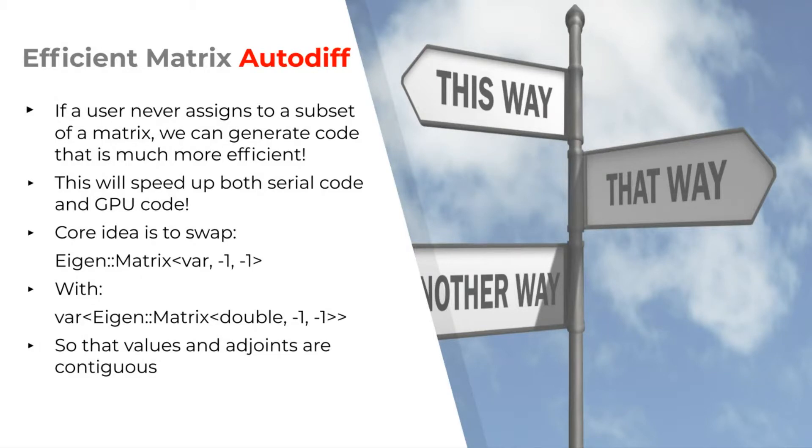The core idea here is to swap out the eigenmatrix of vars, which stores each value and adjoint next to each other, for a var of eigenmatrix types, which will store all values and adjoints of the matrix in two separate contiguous arrays.